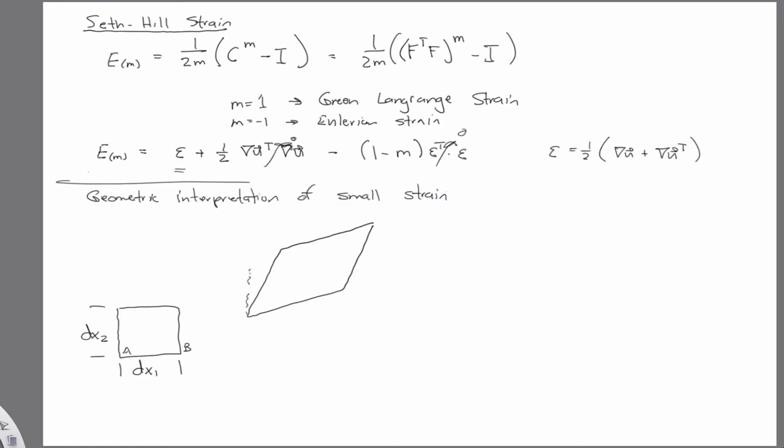And I'm going to superimpose the original shape here. So we're going to call this a prime and b prime. And so the rigid body displacement would be u1.